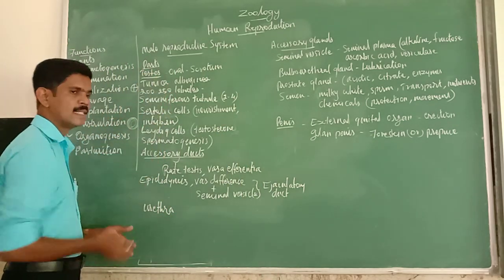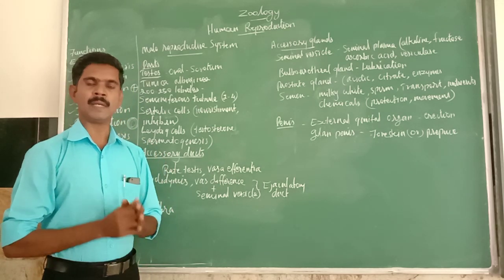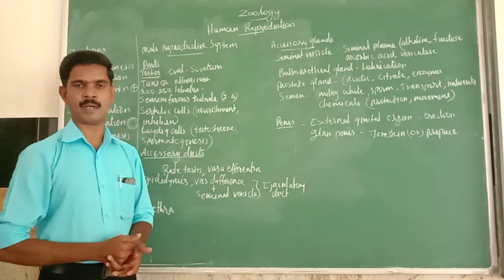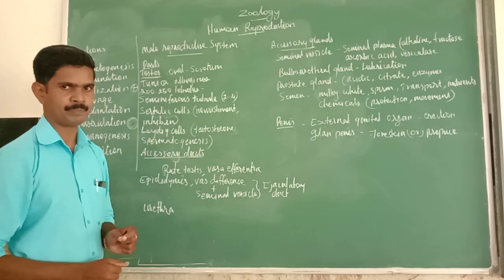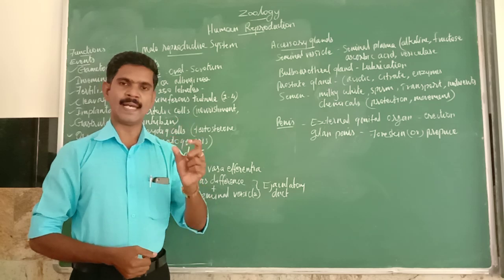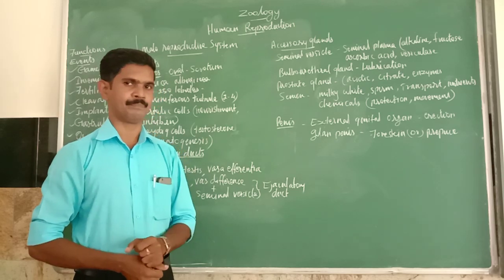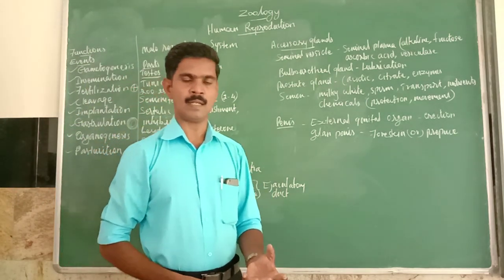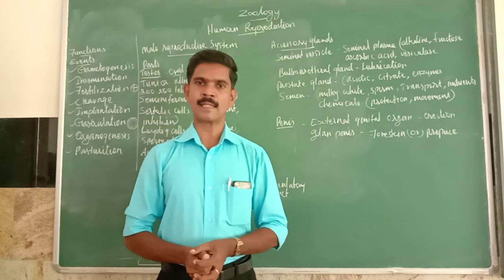The testes is the primary male reproductive organ. Its major function is the production of healthy and effective sperm. The shape of the testes is oval-shaped, and a pair of testes is present in the male reproductive system. The testes is always hanging outside the abdominal cavity, kept inside a sac-like structure called the scrotum.